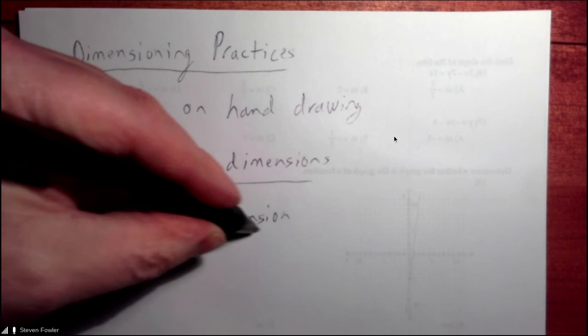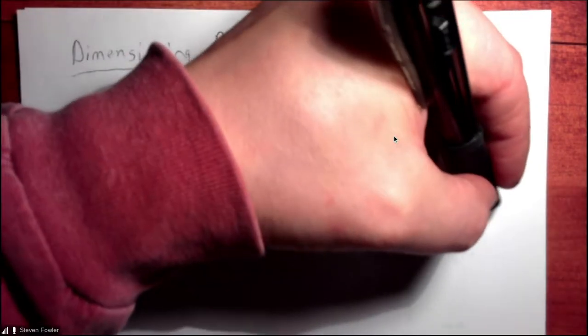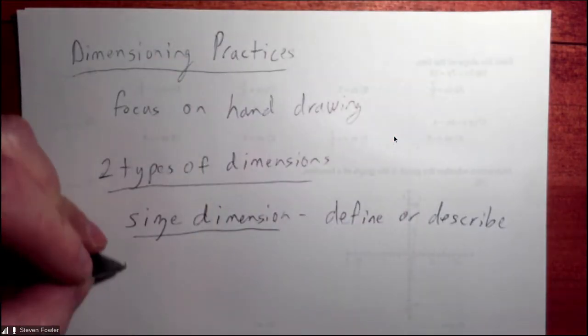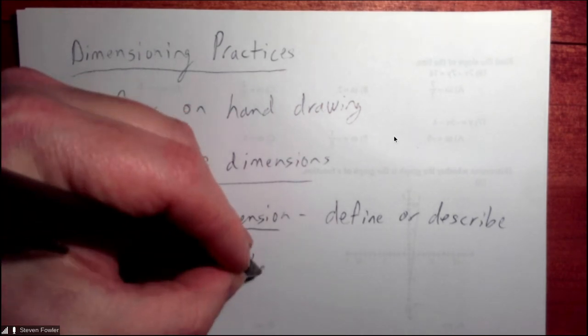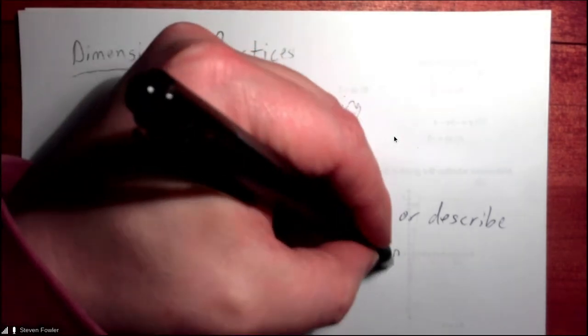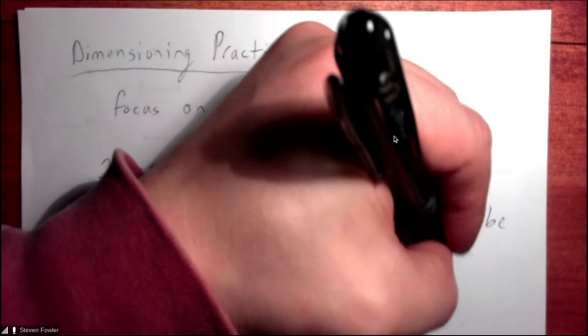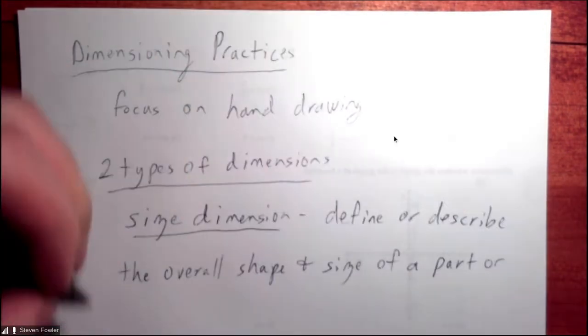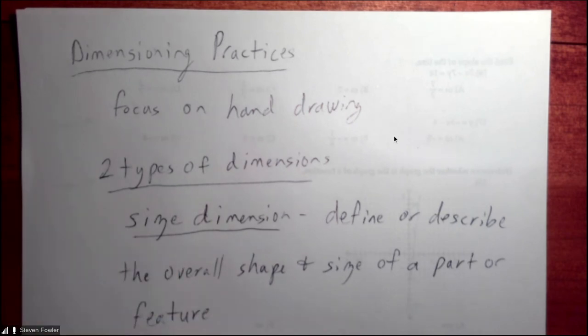So a size dimension is going to define or describe the overall shape and size of a part or feature. Part's kind of a generic term.